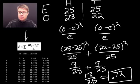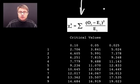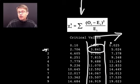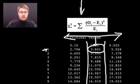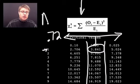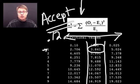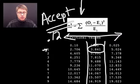Now let's go to our critical values chart. We have one degree of freedom — two outcomes minus one. In the 0.05 column our critical value is 3.841. Our calculated value of 0.72 is lower than 3.841, so we accept the null hypothesis. That means my wife did a great job, there's nothing wrong with the coins, and we accept that there is no statistical difference between what we observed and what we expected to see.